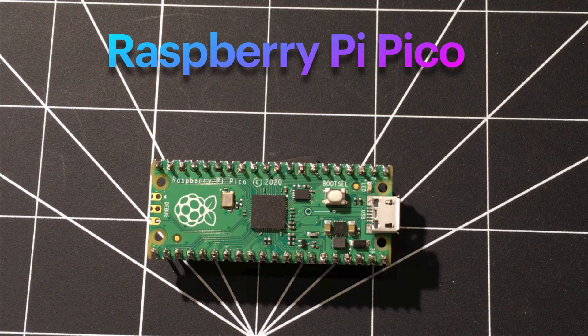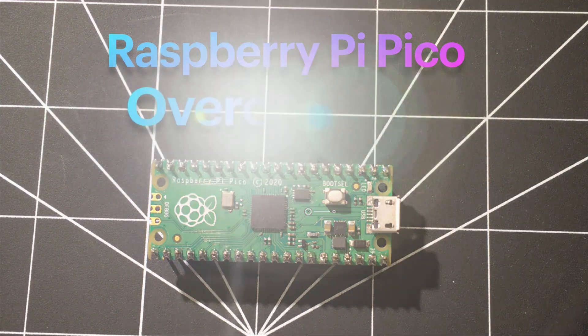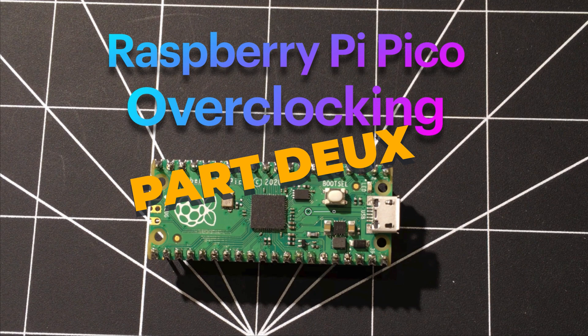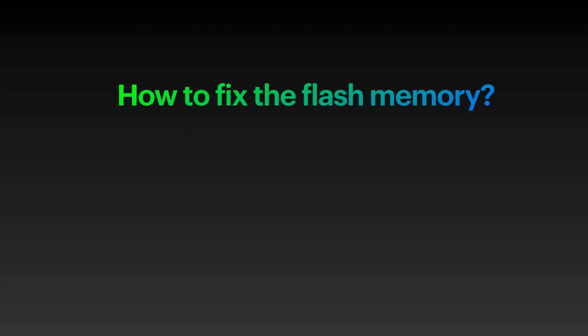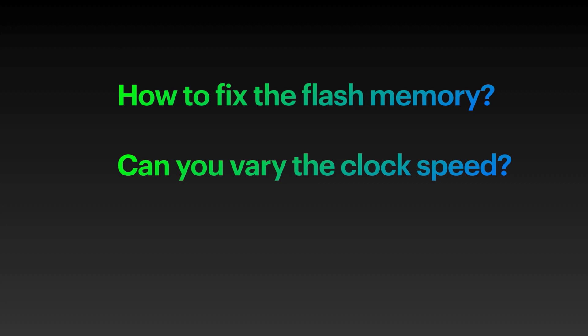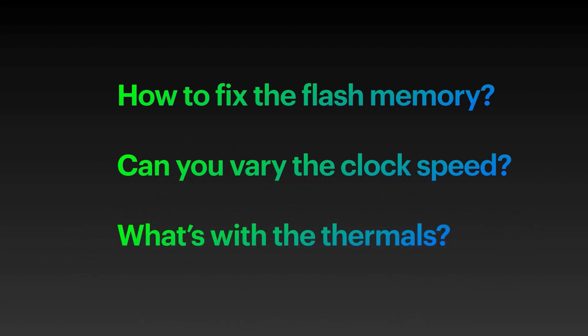Welcome back. I made a video a few weeks back about overclocking the Raspberry Pi Pico and I received a bunch of feedback. In this video I'm going to answer three questions: how to fix the overclocking issue where you can't talk to the flash memory above 300 megahertz, can you clock the Pico up and down or implement variable speed clocks in a program, and what about heat — does the Pico get hot?